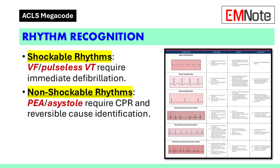Rhythm recognition is a key skill during the Megacode exam. Shockable rhythms such as ventricular fibrillation and pulseless ventricular tachycardia require immediate defibrillation. Non-shockable rhythms, including pulseless electrical activity and asystole, require CPR and identification of reversible causes. Accurate rhythm interpretation ensures appropriate interventions.